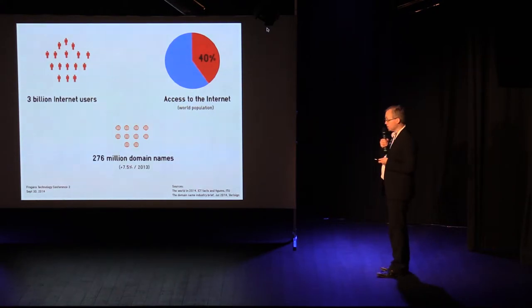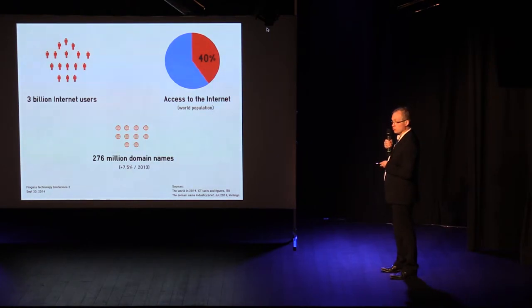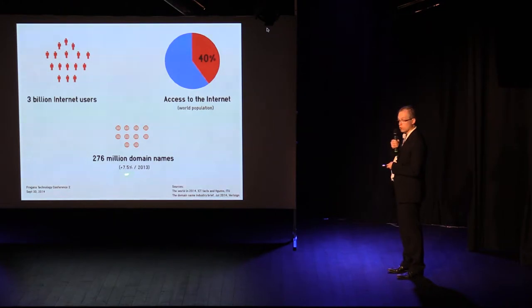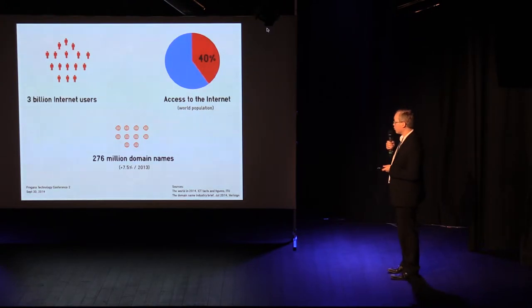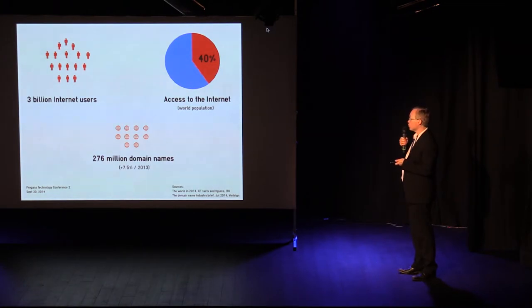This is possible today thanks to two software layers: email and the web. The web, in particular, allows you to consult content published on websites that may be accessed thanks to domain names. Today, we have 276 million domain names — a huge figure — rising by 7.5% compared to 2013. We see large figures which can still grow considerably. Here you have all the sources to find the studies on which these figures are based. That's the overall context for the introduction of Frogan's websites.